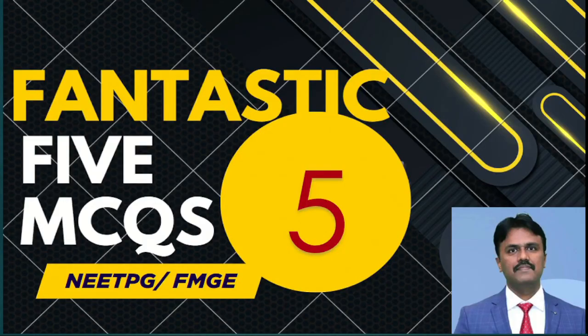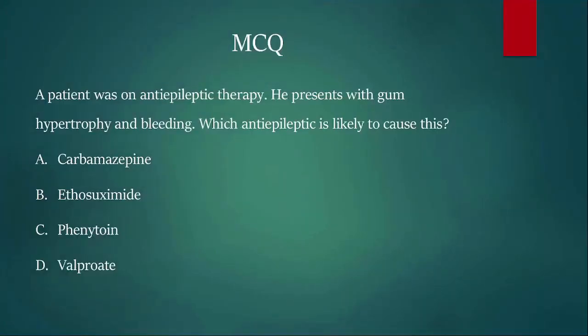Hi everyone, welcome to fantastic 5 MCQs discussion for NEET PG and FMG. Let us start with the first MCQ. The question reads: A patient was on antiepileptic therapy. He presents with gum hypertrophy and bleeding. Which antiepileptic is likely to cause this?